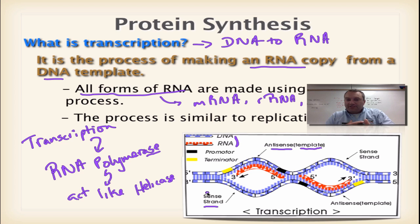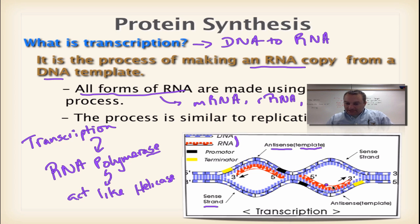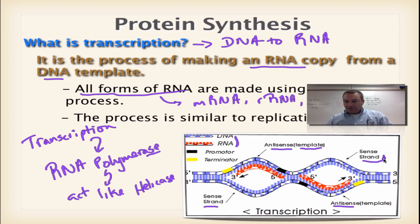To me, it sounds like they should flip these names, because we're actually going to copy the antisense strand. I personally would think they'd call it the sense strand, but they don't. So make sure you get this clear: antisense gets copied, sense strand does not. A different RNA polymerase can unzip the DNA and read the bottom side, making that one the antisense, and the top the sense strand.